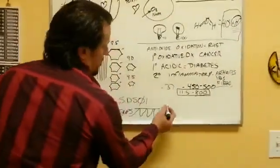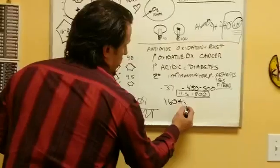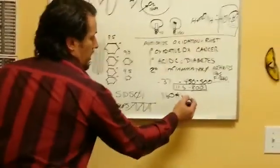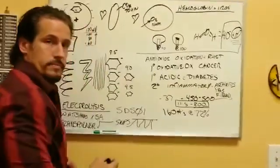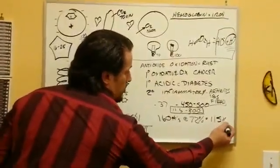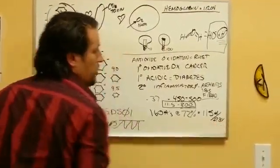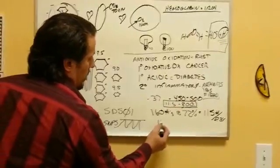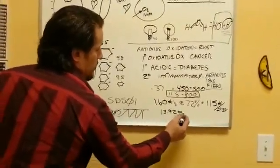For instance, and I use these numbers because they work easy—if somebody weighs 160 pounds and they are 72% water, that means 115 pounds of them is water. If there's 8.34 pounds per gallon of water, they are approximately 13.92 gallons of water.